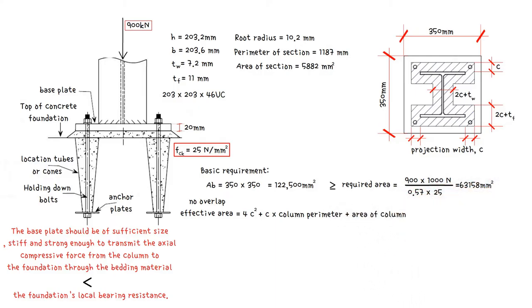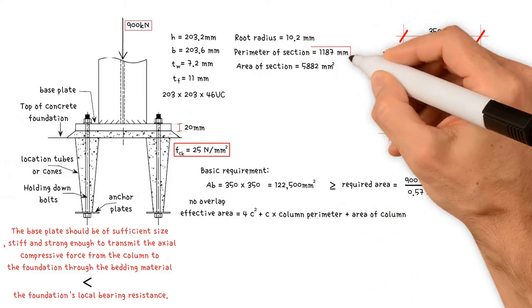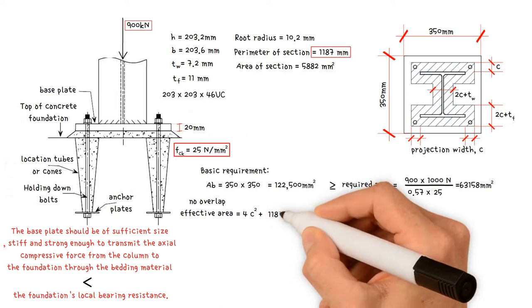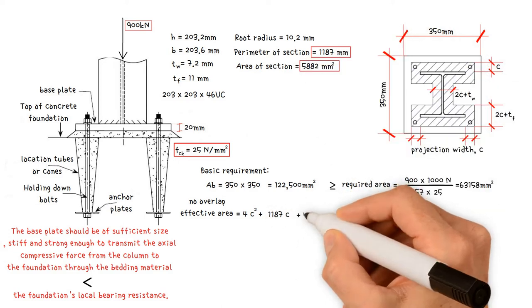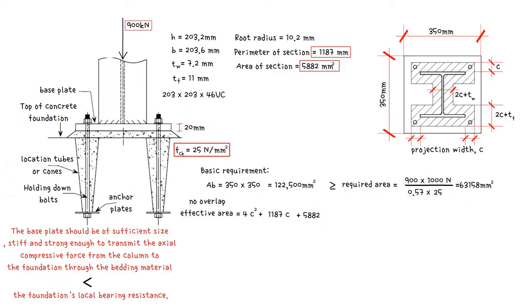This equals 4C squared plus column perimeter 1187C plus area of column 5,882 millimeters squared.